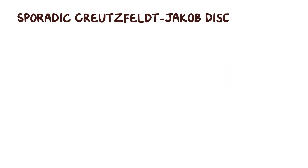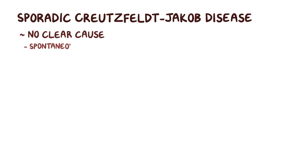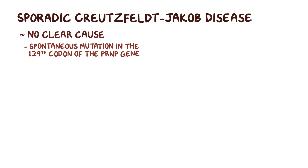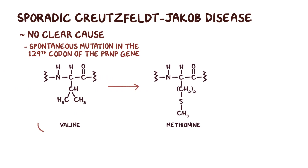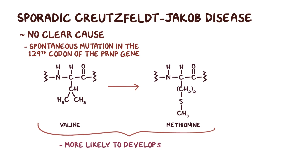Sporadic Creutzfeldt-Jakob disease pops up in populations randomly without a clear cause. This could be due to a spontaneous mutation in the 129th codon in the PRNP gene that replaces valine with methionine. People with this mutation are more likely to develop sporadic Creutzfeldt-Jakob disease and are also more susceptible to variant Creutzfeldt-Jakob disease.